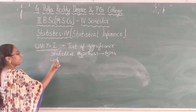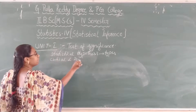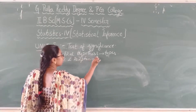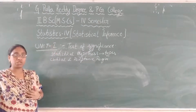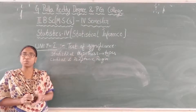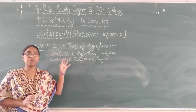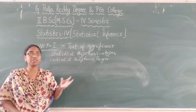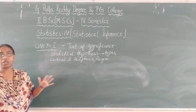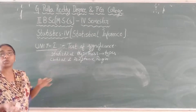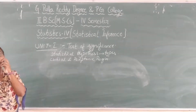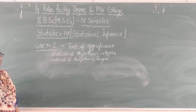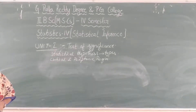Next is critical region and acceptance region. For any probability, we are drawing conclusions by assuming some statements. I will make a statement and check whether it is accepted or not. Based on the given statement, we will get the acceptance region and the rejection region. That rejection region is called the critical region. We will discuss all definitions one by one — I am just giving the overview of the syllabus.